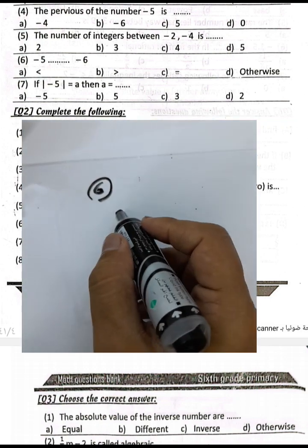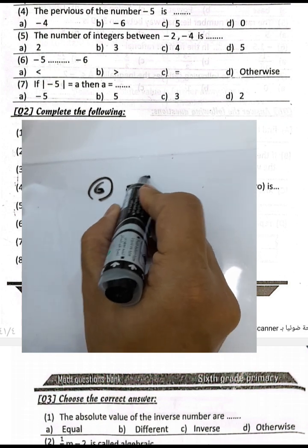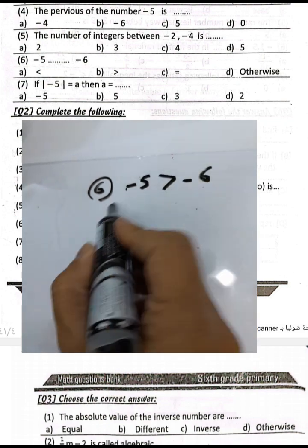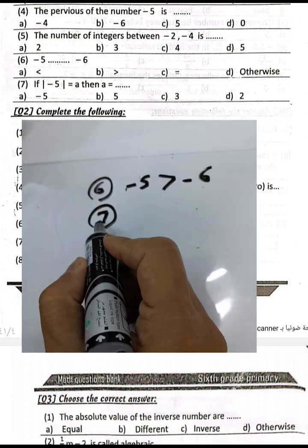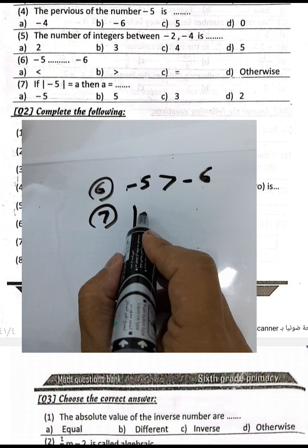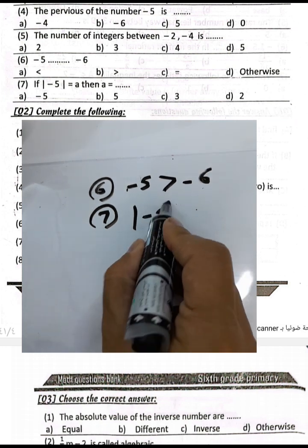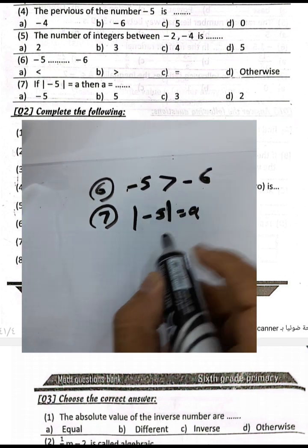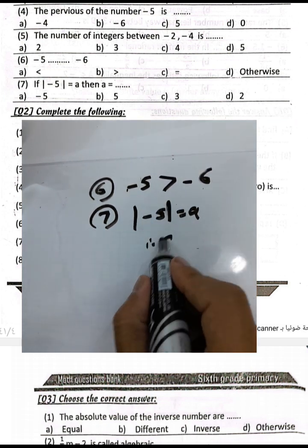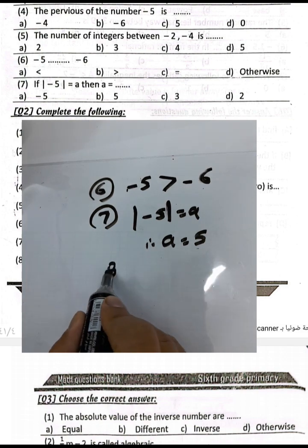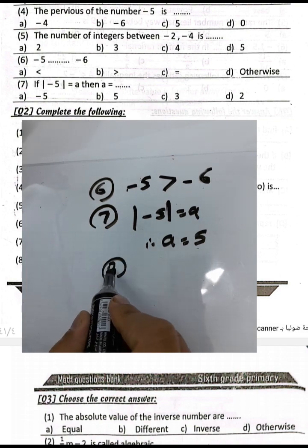Question number six: negative five is greater than negative six. The absolute value of negative five is five.